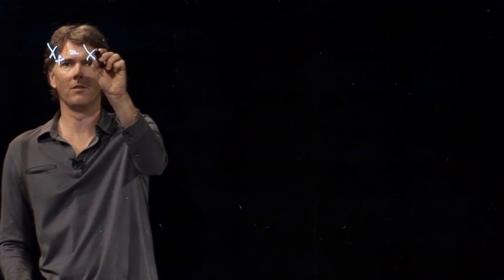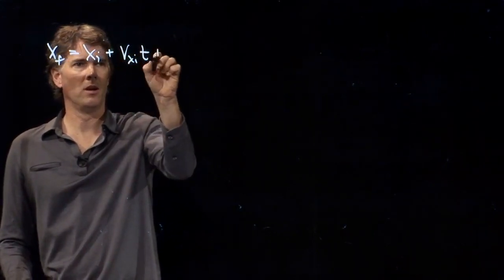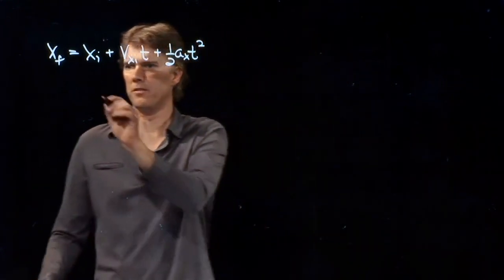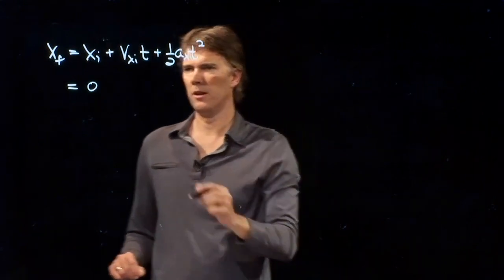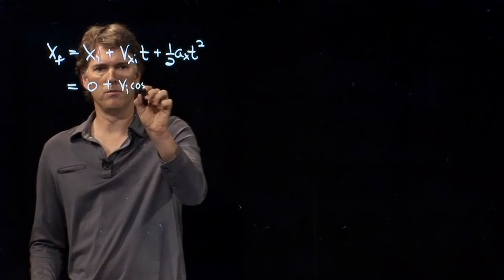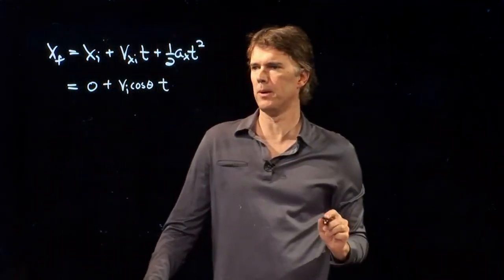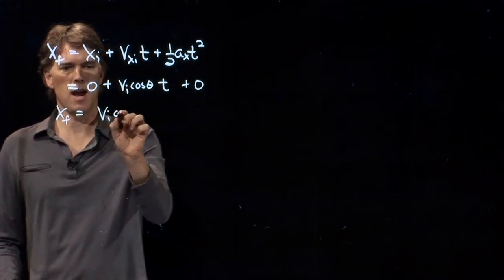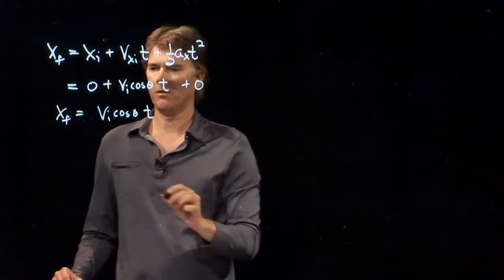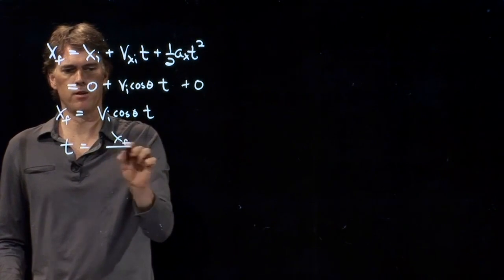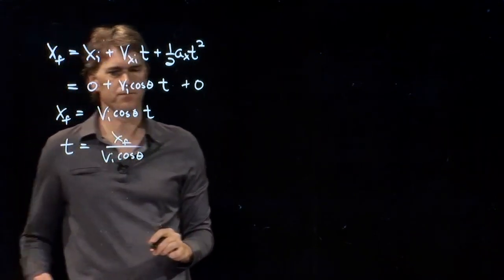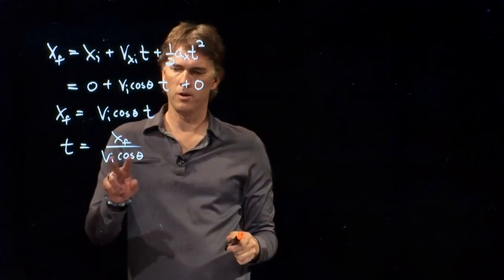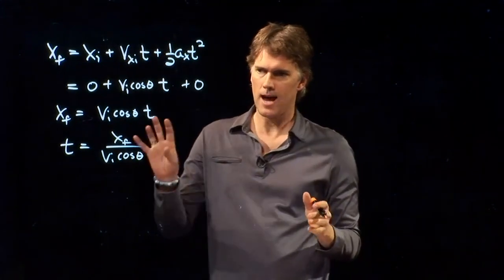One of our kinematic equations is this. X final equals x initial plus vx,i times t plus one half ax t squared. And let's put in some of our parameters now. We've got zero for the initial position. And vx,i we just said was vi cosine theta. We're still going to multiply by t. A sub x we said was zero. And so we get xf is equal to vi cosine theta times t. And so we could solve this for t. t is xf over vi cosine theta.